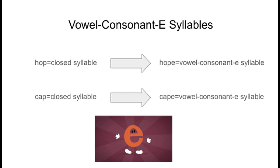An example of a closed syllable word is the word 'hop.' This word has a short vowel. When we add a silent e to the end of it, the vowel becomes long, and this word becomes 'hope.' Although these words look similar, they are very different. The same thing happens with the word 'cap.' Cap is a closed syllable word with a short vowel, but when we add a silent e to the end of it, the vowel becomes long and this word becomes 'cape.' Cape is a vowel consonant e syllable word.